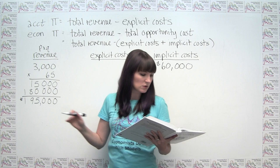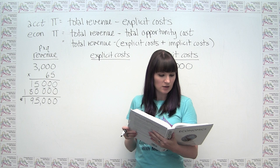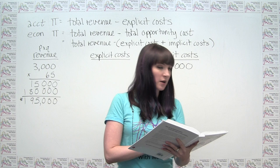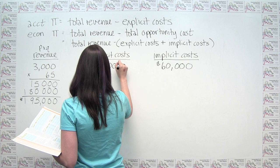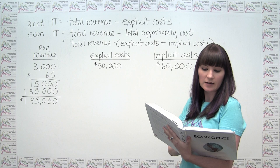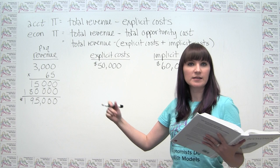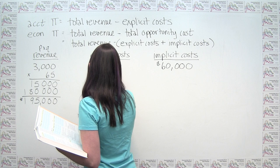Then we come back to the cost side. Jared spent $50,000 on rent — he actually spent that money, so that's an explicit cost. He also spent $100,000 on wages for his employees. Again, when you're paying out money, that's an explicit cost. So we put $100,000 also under explicit costs.